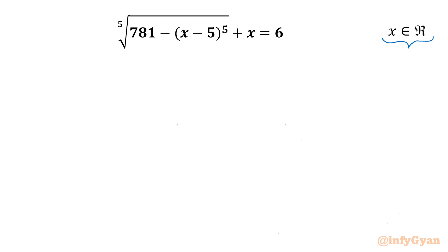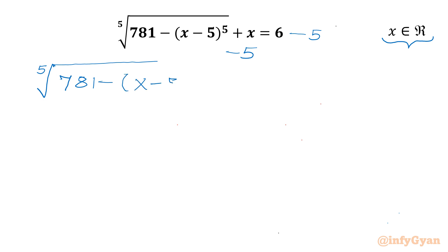Let's get started with our manipulation step. I will subtract 5 from both sides at the beginning. This gives us the 5th root of (781 minus x minus 5) whole power 5, then we have x minus 5. And on the right hand side, 6 minus 5 gives us 1.